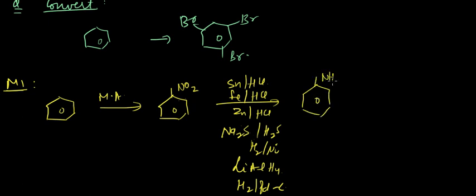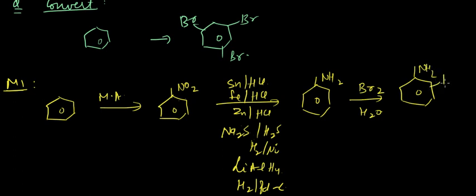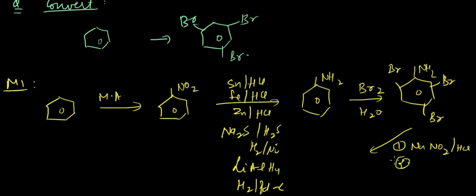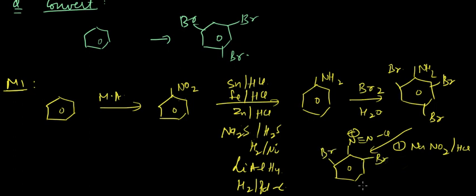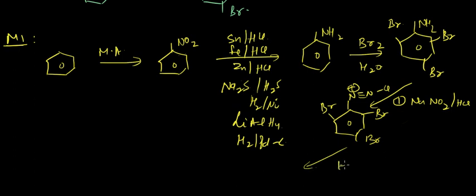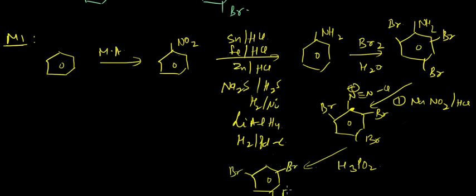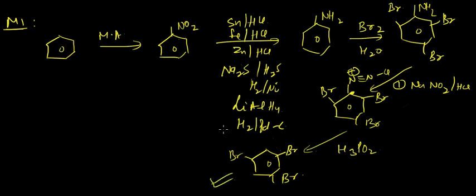Reduction of the nitro group gives aniline. If we then treat it with bromine water, bromine will occupy the ortho and para positions. We then react with NaNO2 in presence of HCl to get the diazonium salt. Subsequently, reacting with H3PO2 substitutes hydrogen in place of the N2+Cl group, converting this compound into the desired product. We'll discuss the second method next lecture — good luck and goodbye.